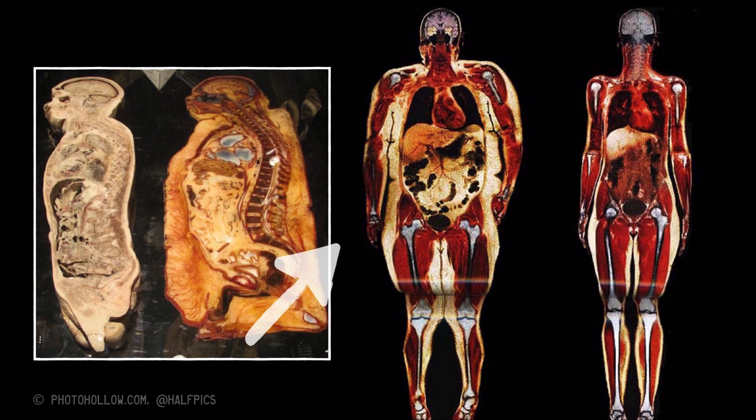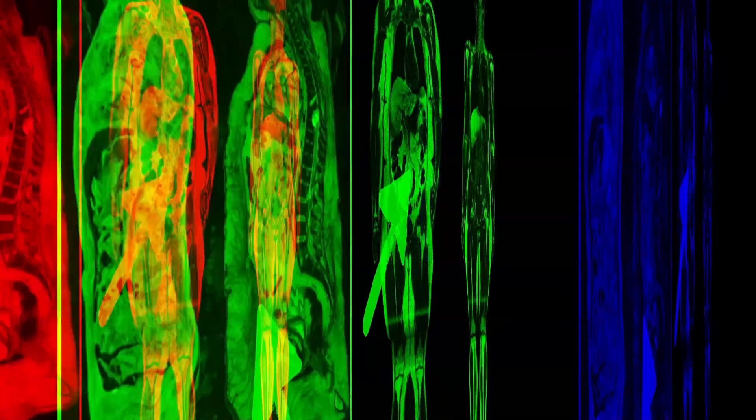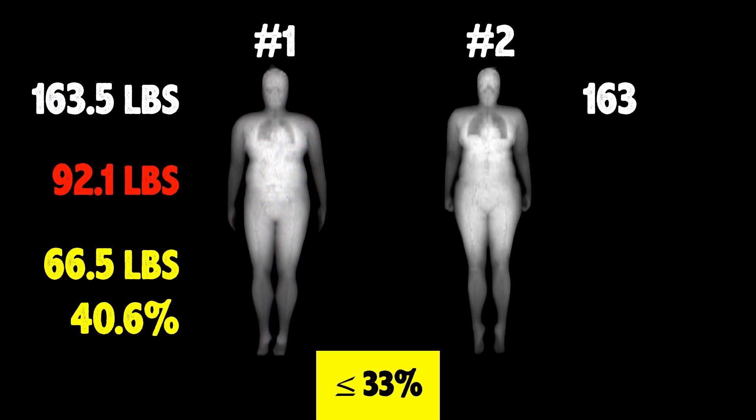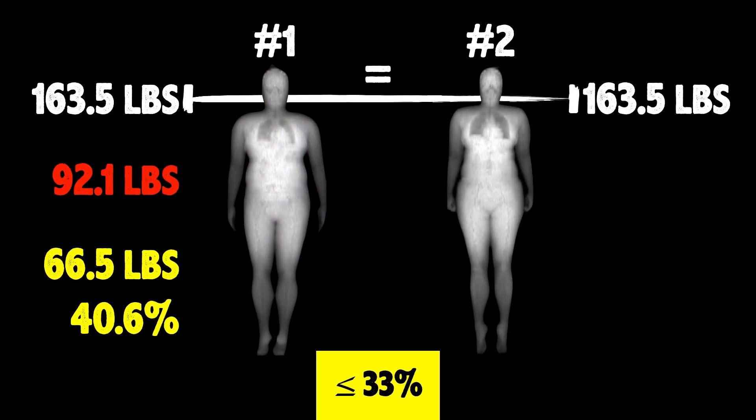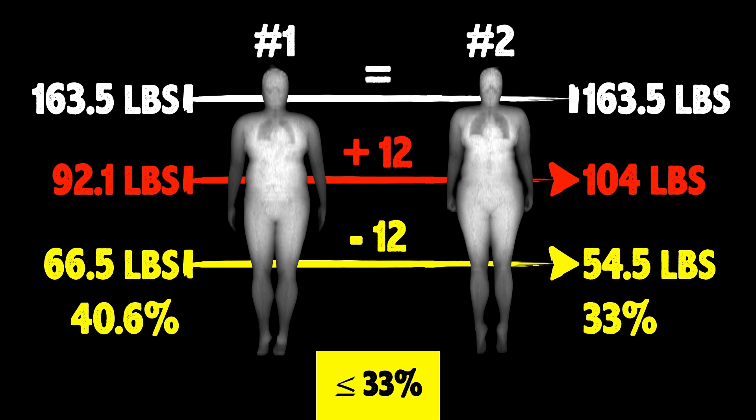Now take woman number two. She also weighs 163.5 pounds. However, only 33% of her body weight is fat, which is around 54.5 pounds. She also has 104 pounds of lean tissue. So at the same body weight, she has 12 more pounds of lean mass and 12 less pounds of fat mass than woman number one. Also notice that she has a body fat percentage that's not too high, as it's just at the 33% mark.